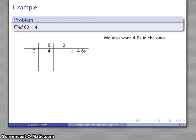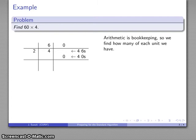And I also want 4 of the 0s, because again I'm going to take 4 of everything. And 4 of 0s is 0. And altogether, arithmetic is bookkeeping, so what we want to do is keep track of how many of each unit that we have. So here I have 2 100s, 4 10s, 0 1s. That tells me that 60 times 4 is the same as 4 times 60, is 240 in standardized terms.